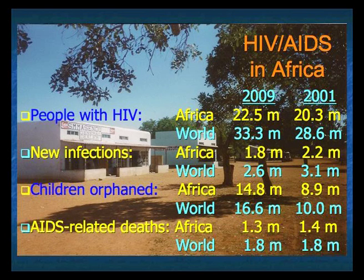These are some statistics from the latest World Report from UNAIDS. The numbers for 2009 are in one column, the 2001 numbers in another, with the yellow figures for Africa and the light blue ones for worldwide totals. Africa accounts for roughly 70% of people living with HIV, roughly 70% of new infections each year, roughly 70% of AIDS-related deaths, and slightly more than that for children orphaned as a result of family members succumbing to AIDS.